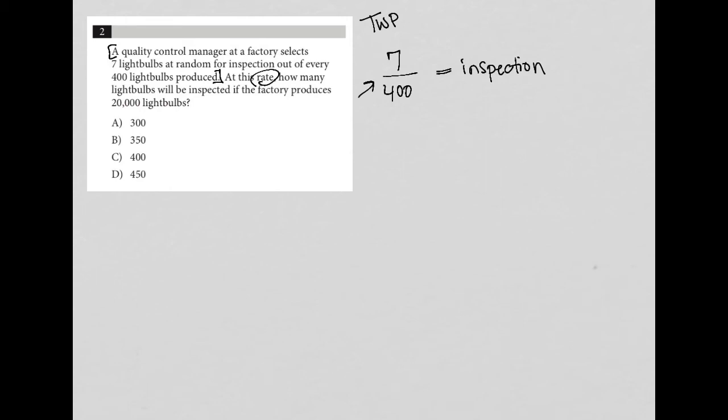How many light bulbs will be inspected if the factory produces 20,000 light bulbs? So now we're trying to relate the ratio that we already had, seven out of 400, to a new ratio that we want to figure out.